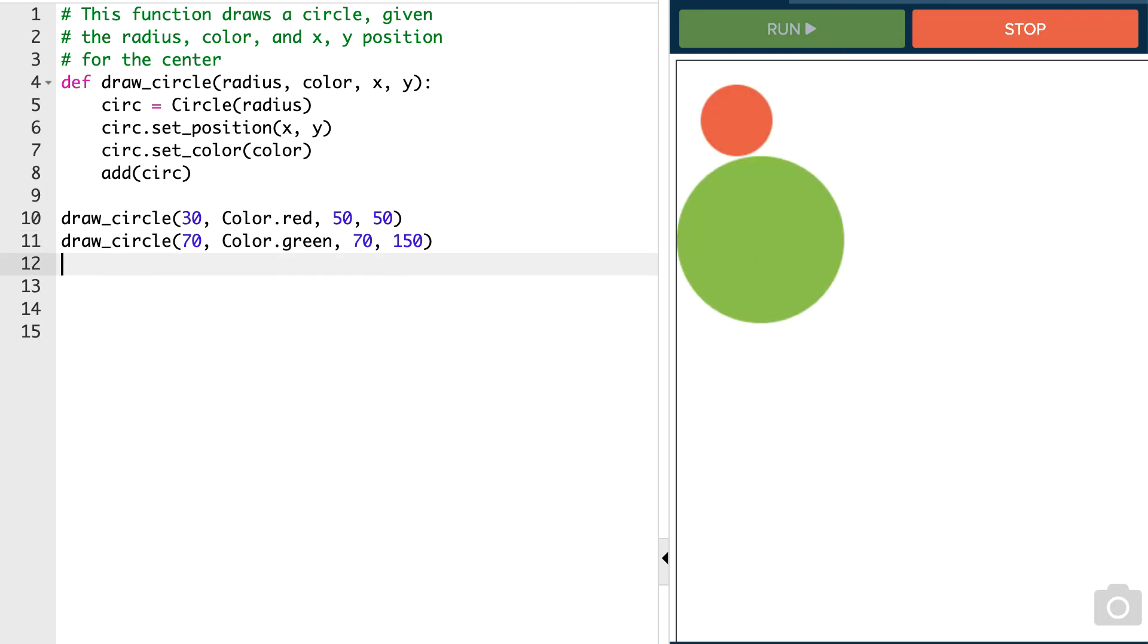Okay, if we want to put one right in the middle of our canvas, we can say draw a circle. We'll put one, say size of 50, color of blue, and we'll put it in the middle.